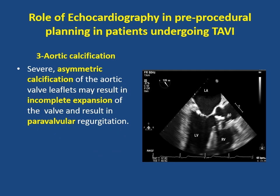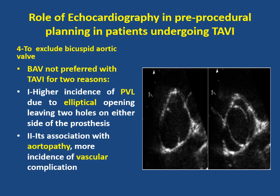The third role in pre-procedural planning is identification of aortic calcification. Severe asymmetric calcification of aortic valve leaflets may result in incomplete expansion of the valve and result in paravalvular regurgitation. It is also important to exclude bicuspid aortic valve.